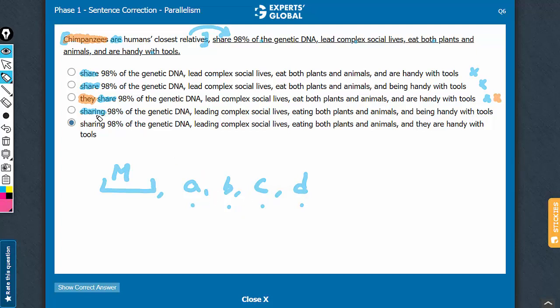And then, let's ensure that a, b, c, d are parallel. Sharing, leading, eating, and being. So see, all the four verbs are parallel. They are in that verb plus ing form.